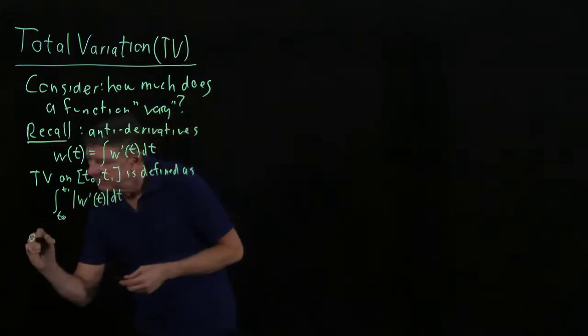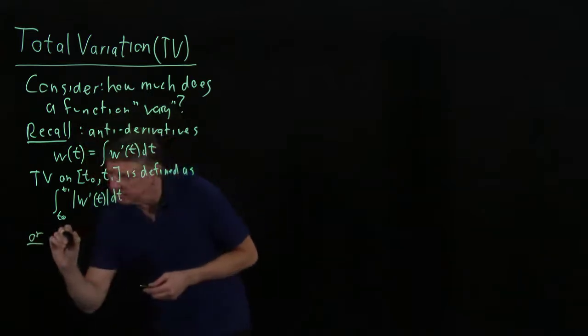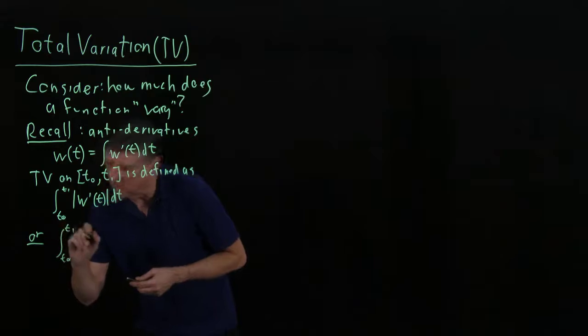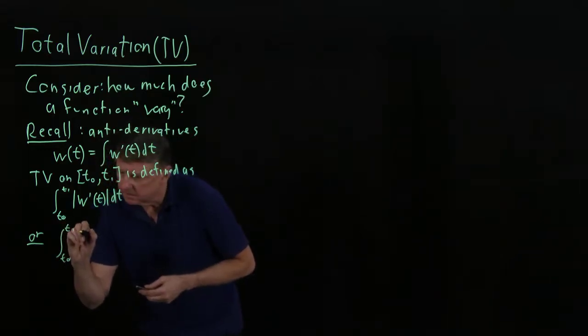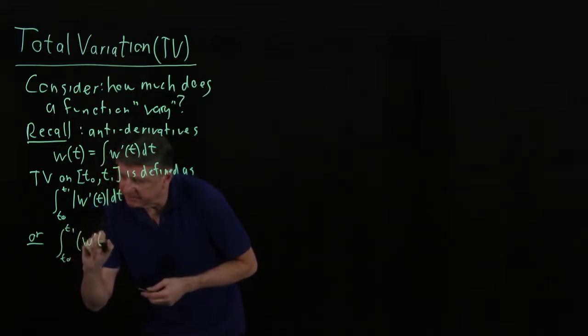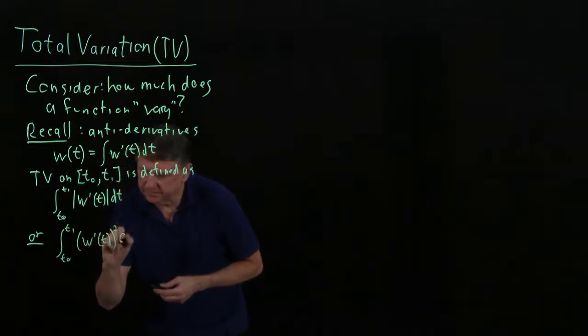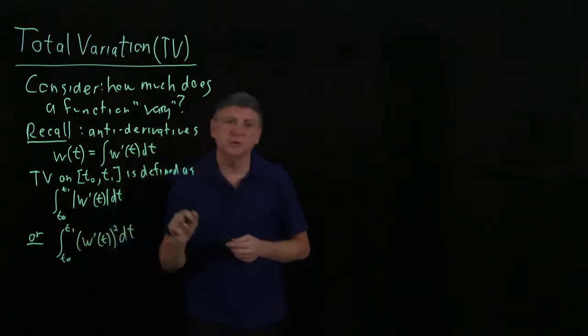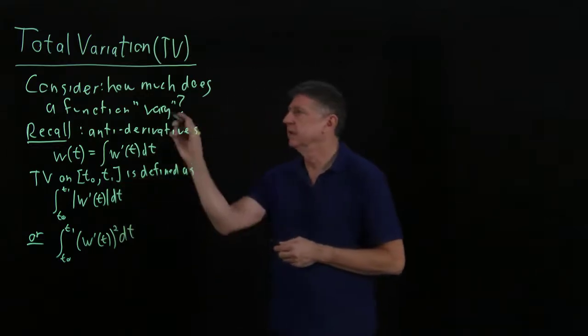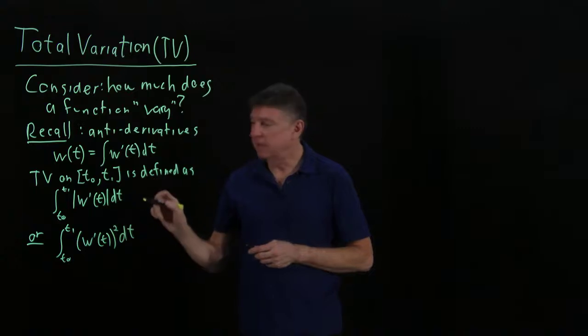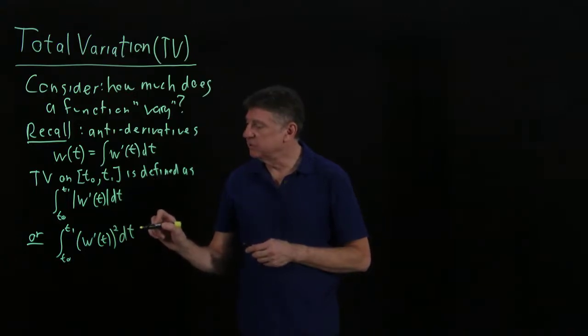Or, it might be the integral from t0 to t1 of, we take the derivative of the function we're looking at, and we square it. And there are these two competing ideas in total variation. One is to use the absolute value, and one is to use the square.